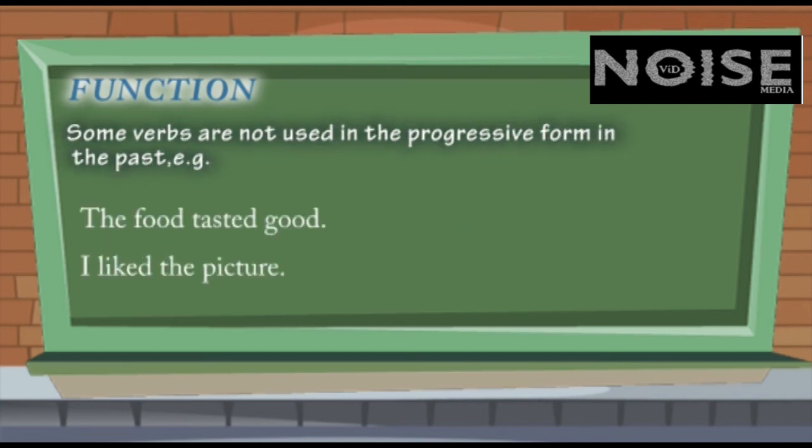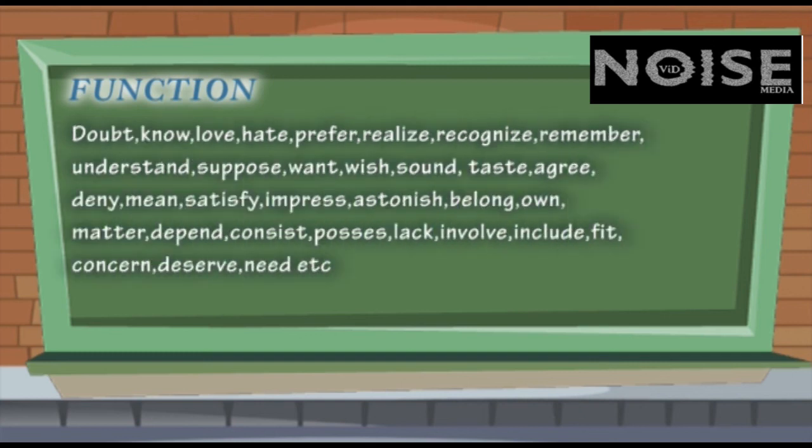Some verbs are not used. Remember, we don't use these verbs in continuous form because they look odd. For example, The food tasted good. We can't say the food was tasting good. And I liked the picture. We can't say I was liking the picture. In similar fashion, we have got the words like doubt, know, love, hate, prefer, realize, recognize, which can't be used in ING form. If you use them in ING form, they look bad. Sometimes they are wrong. They are not used in this way. That's why you should be very clear in knowing what words should be avoided in this regard.